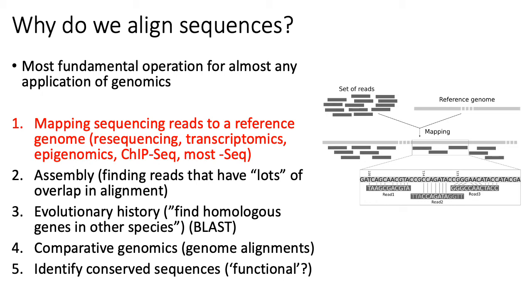This applies to resequencing — finding differences between a target genome and your reference genome. It's applicable in transcriptomics, where you map short reads from transcripts back to the genome to determine which gene they came from. In epigenomics, we sequence genomic fragments near histones with certain modifications and map short reads to genomic locations to determine where histone modifications are located along the genome. It's also useful for ChIP-seq to identify where transcription factors bind across the genome.